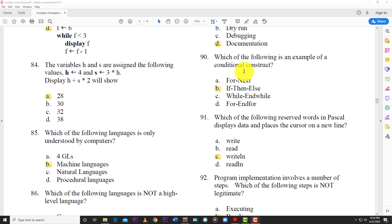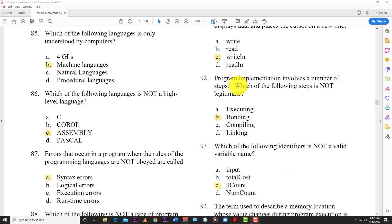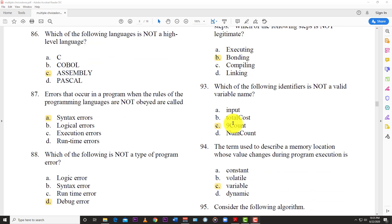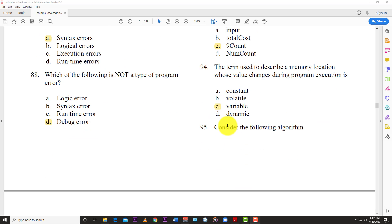Number 90: Which of the following is an example of a conditional construct? And the answer here is B, if, then, else. All these are programming. We're looking at programming here right now. Number 91: Which of the following reserved words in Pascal displays data and places the cursor on a new line? And the answer here is write LN. Number 92: Program implementation involves a number of steps. Which of the following step is not legitimate? And the answer here is B, bonding. So you have to go and brush up any programming. Number 93: Which of the following identifiers is not a valid variable name? And the answer here is C, nine count.